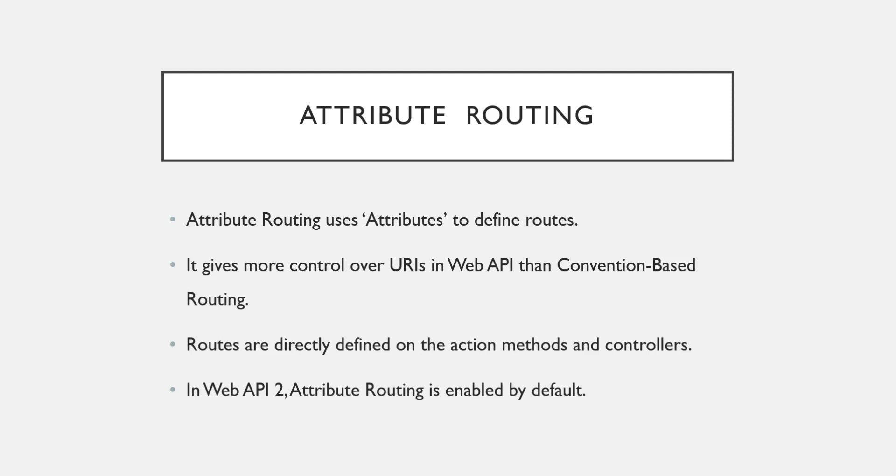Our method is nothing but our action method, and class is nothing but our controller. So above your controller and above your action method you define a specific attribute, which is a route attribute, to define your route. We are going to see this practically.